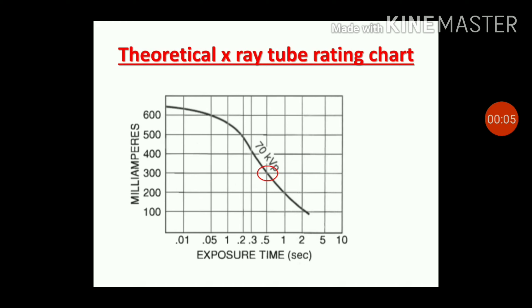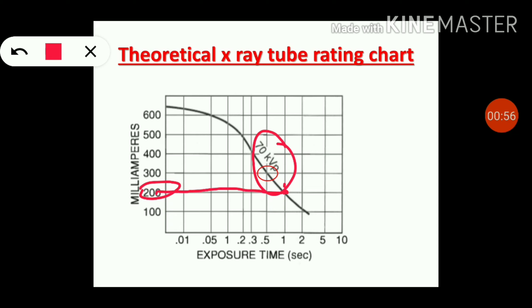How does this generator function? This is a theoretical X-ray tube rating chart with the X-ray tube operating at 70 kVp. If you want an X-ray tube exposure of 70 kVp and 200 mAs as desired, then the X-ray tube could be operated at 70 kVp, 200 mA. This will give us a rating of 0.1 seconds - that is 200 mAs to produce such an exposure.